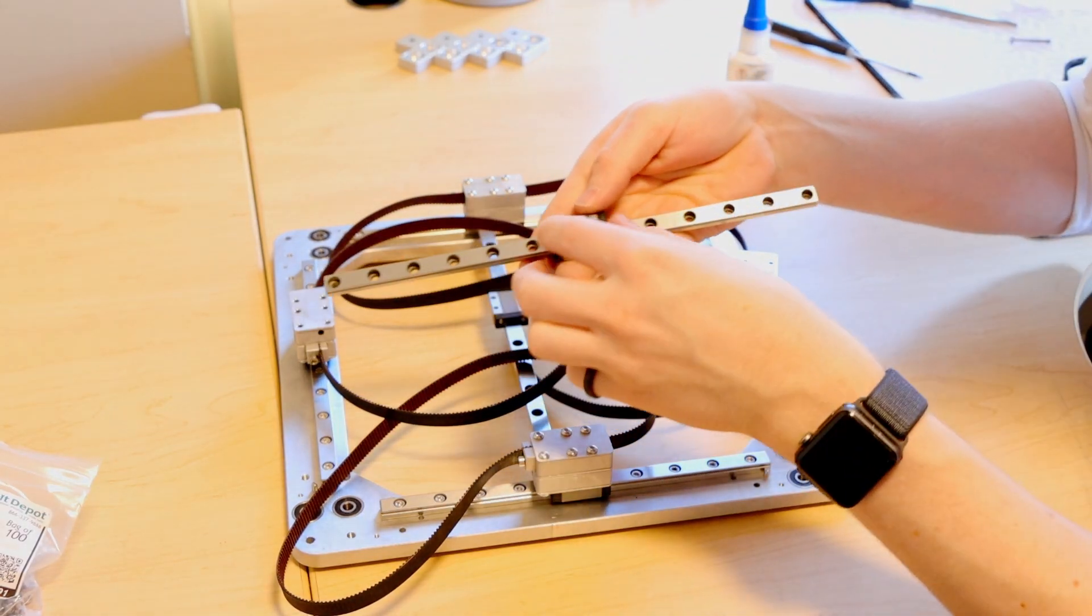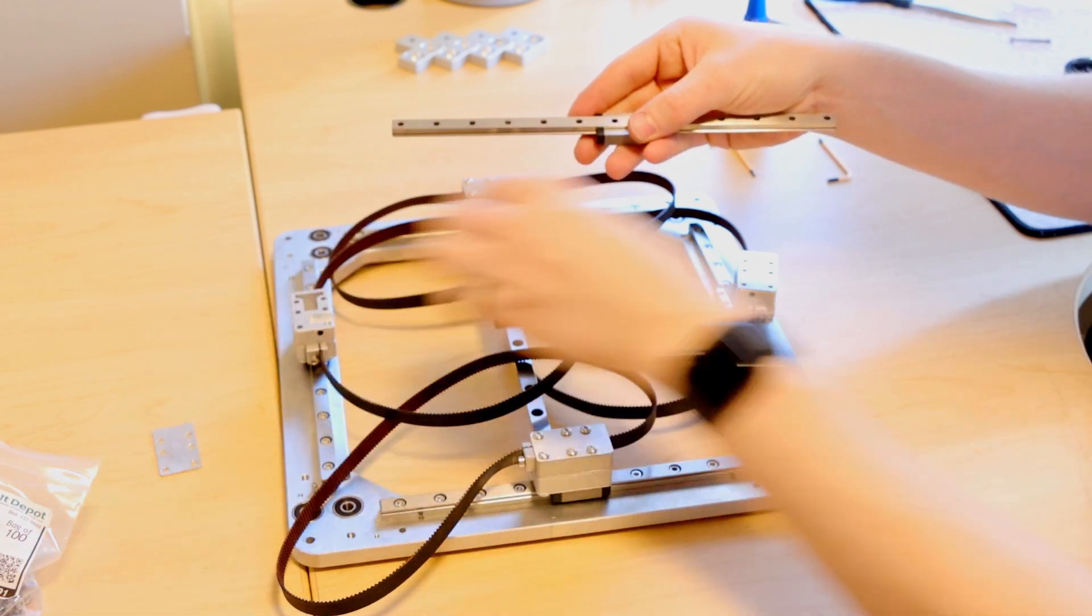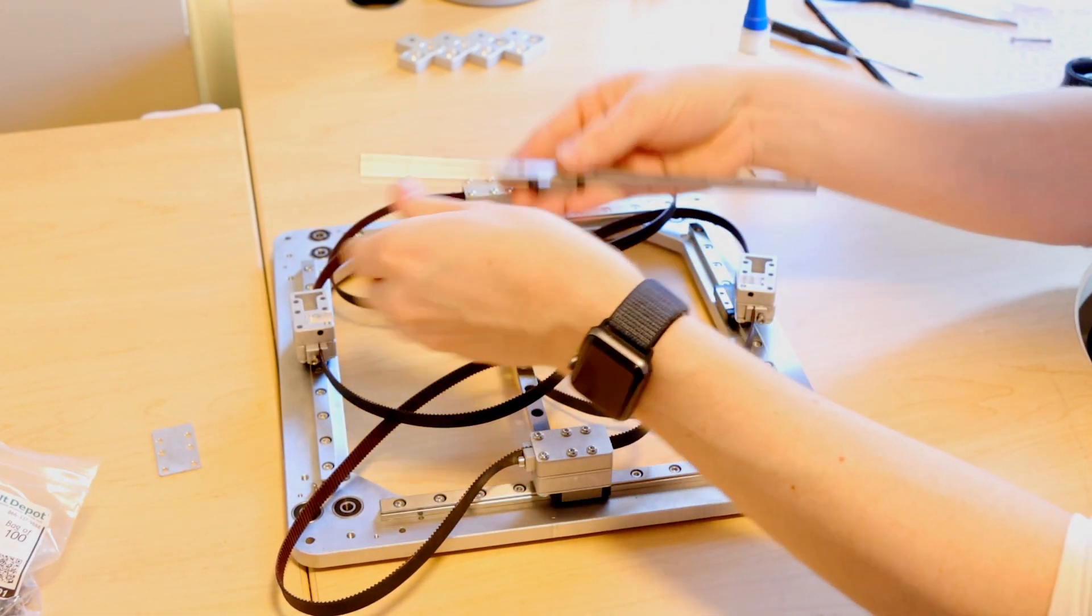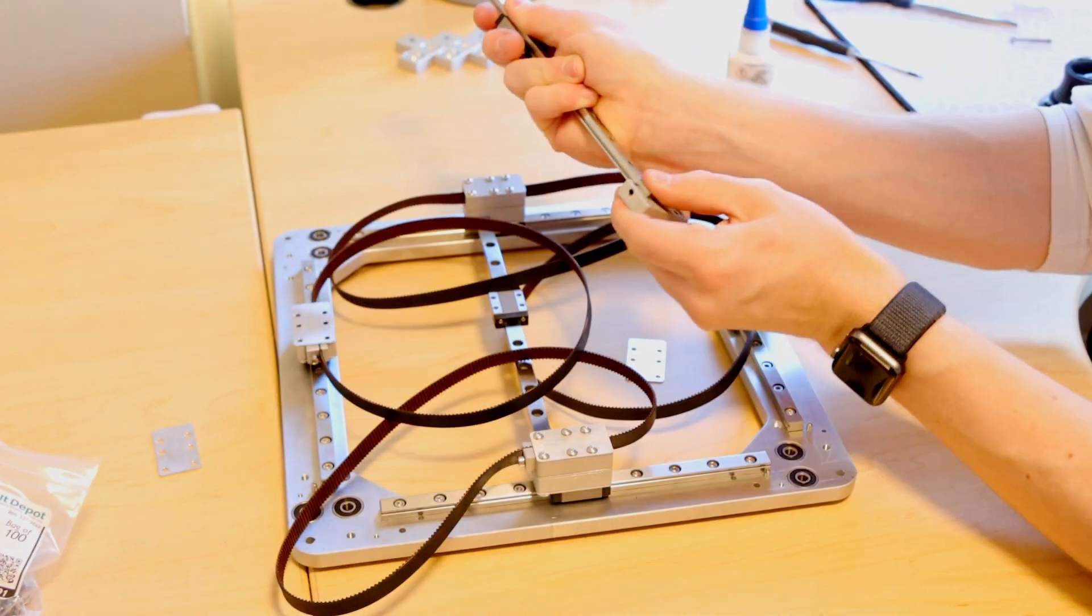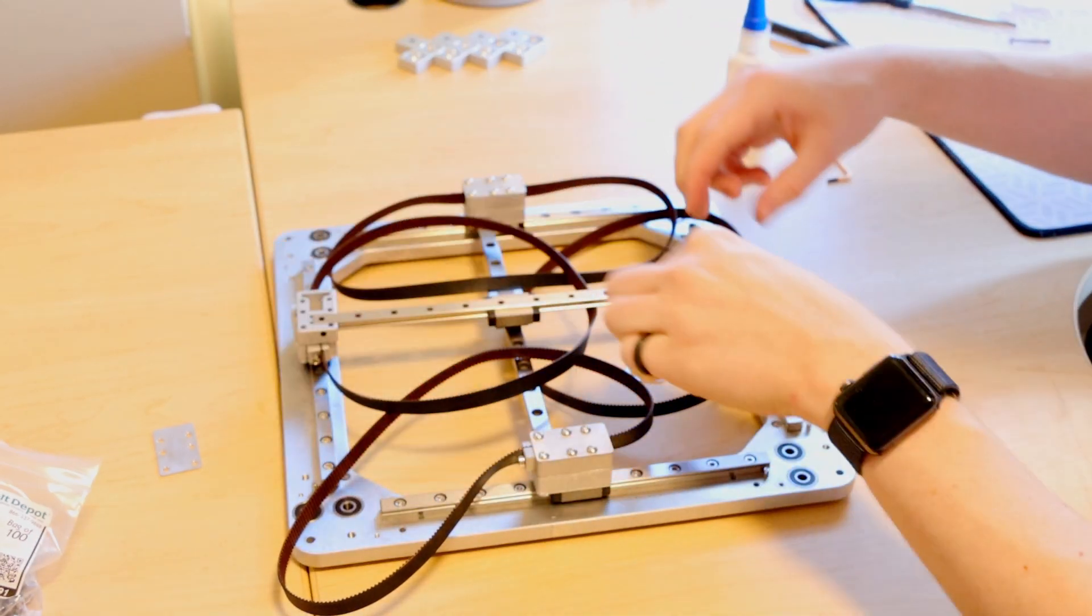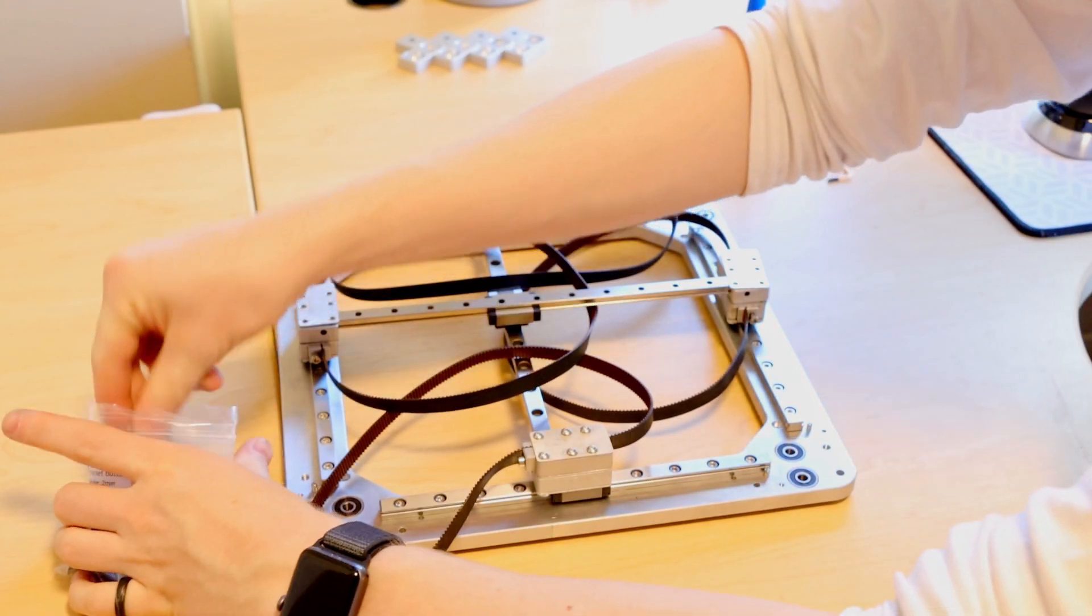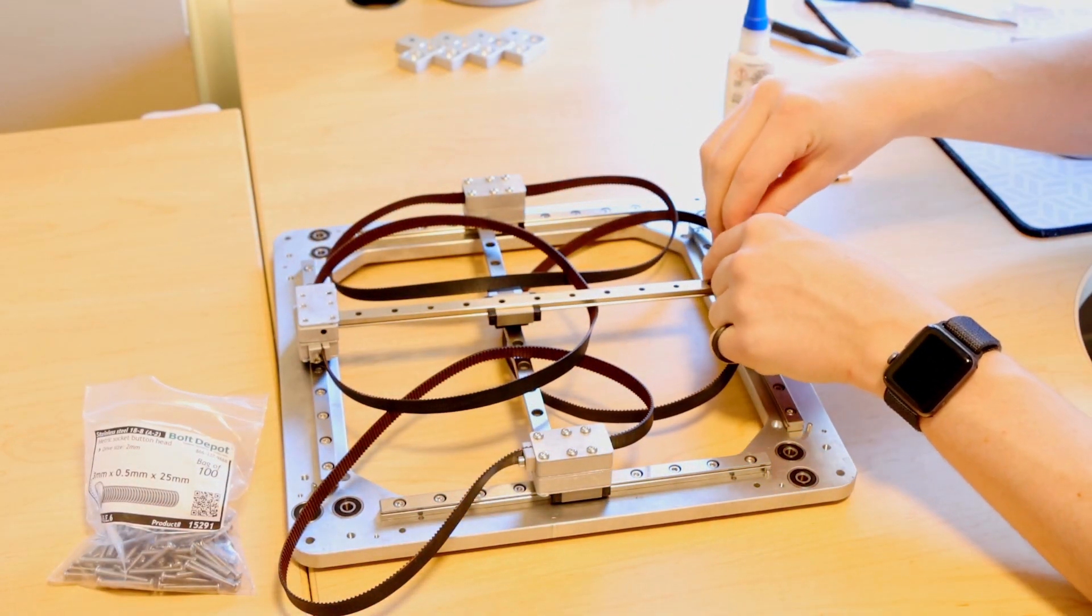And so now we can take the last crossrail and this crossrail will actually be mounted in this block with the carriage facing down. And like before we'll be using the 25mm screws to hold these assemblies together.